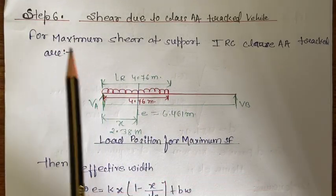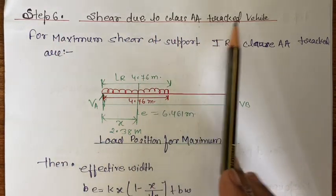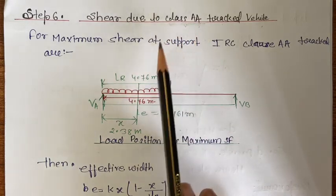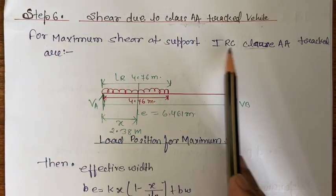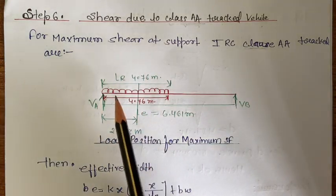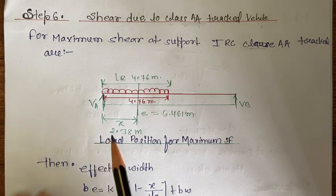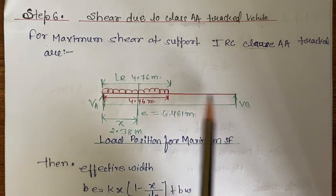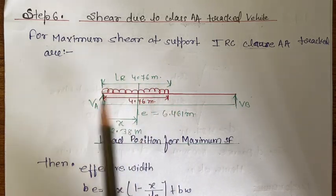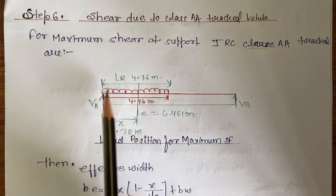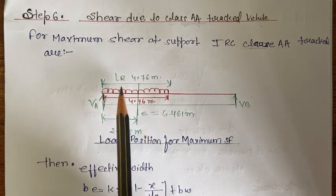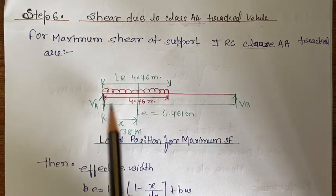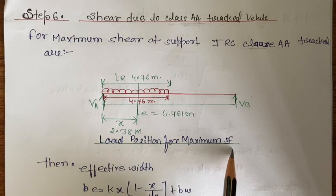Step 6: shear due to Class AA track vehicles. For maximum shear at the support, the vehicle is placed near the support rather than at the centre. This is the load position for maximum shear force. Effective span LE equals 6.461 meter, and X equals 2.38 meter, which is half the effective vehicle length LR.